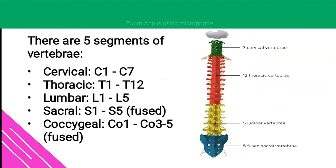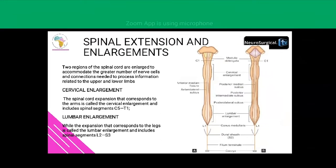The spinal cord has five segments: the cervical segment from C1 to C7 (seven vertebrae); the thoracic from T1 to T12 (twelve); the lumbar from L1 to L5 (five); the sacral from S1 to S5, which are fused; and the coccygeal from one to three or five, also fused. On the image, green shows the seven cervical vertebrae, red the twelve thoracic, yellow the five lumbar, and blue the five sacral vertebrae.